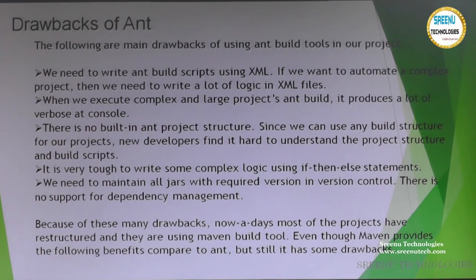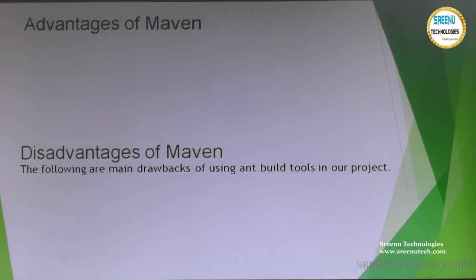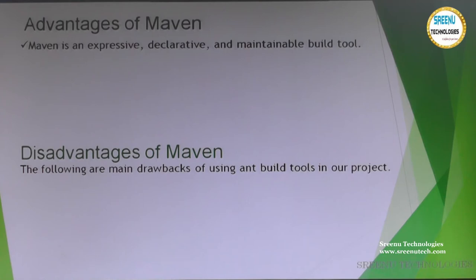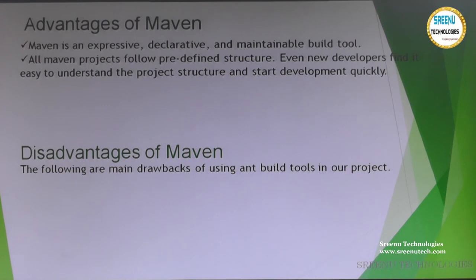Because of these drawbacks, most projects restructured and started using the Maven build tool. Even though Maven still has some drawbacks, it provides significant benefits over Ant. Maven is an expressive, declarative, and maintainable build tool. Expressive means each requirement can be specified as a command and it will be interpreted automatically. It is also declarative, written in a pom.xml file. All Maven projects follow a predetermined structure using templates called archetypes.